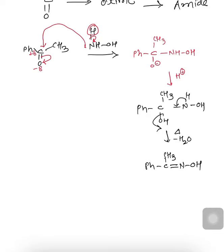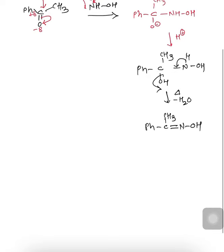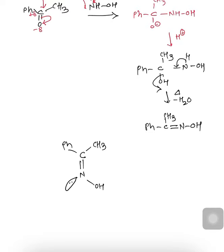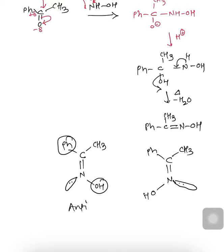This ketoxime molecule can have two configurations. If Ph and OH are in the anti position relative to each other across the C=N bond, this is the anti (E) form. The other possibility is OH and Ph on the same side, which gives the syn (Z) configuration. The anti configuration is more stable and will be preferentially formed.